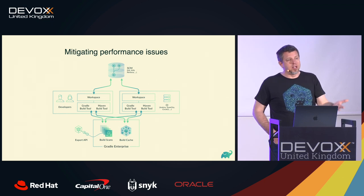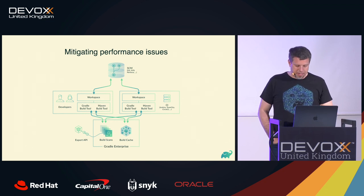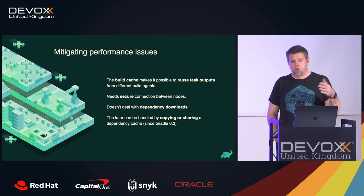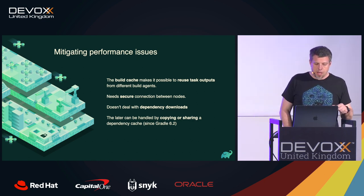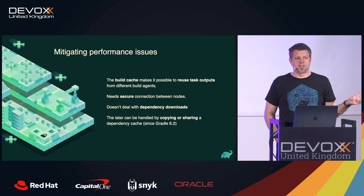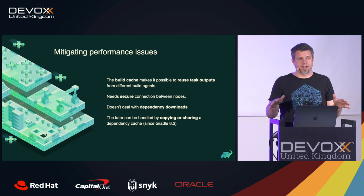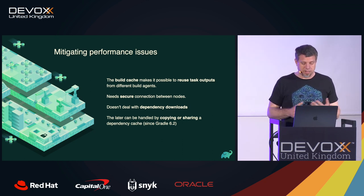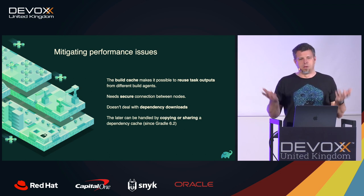One mitigation on the Gradle side is a build cache — also available for Maven as a paid option — which allows reusing task outputs from previous builds without having local state. But in a security talk, we have to acknowledge: adding one more element in the supply chain means you've increased your attack surface. You need secure connections between nodes, and in the context of Gradle and Maven, the build cache doesn't deal with dependency downloads, which brings us to the next section.